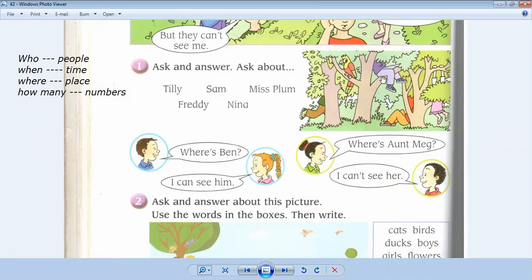So ask and answer. For example, where is - I use 'where' for asking about a place. Where's Aunt Mink? Where's Pen? Who's wearing the pink dress? How many people in the picture? This is the usage of WH questions.